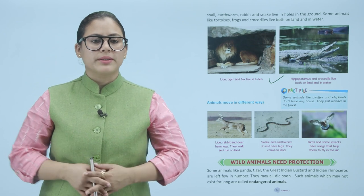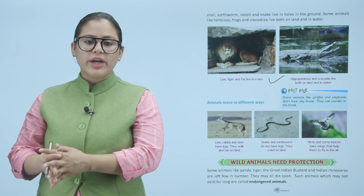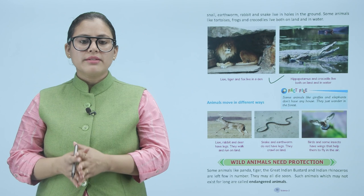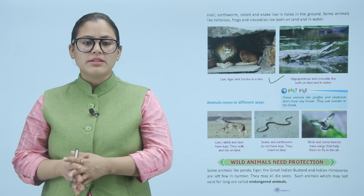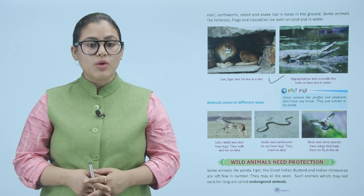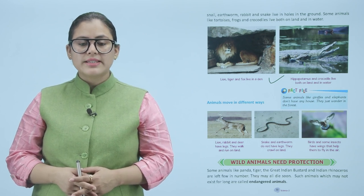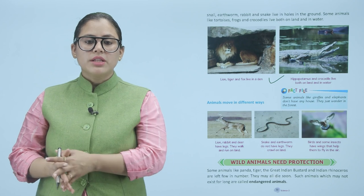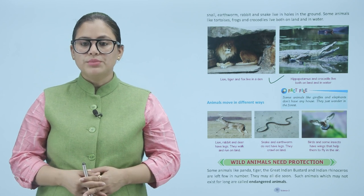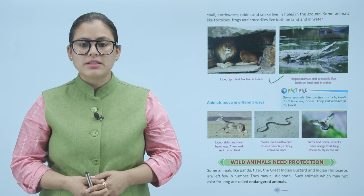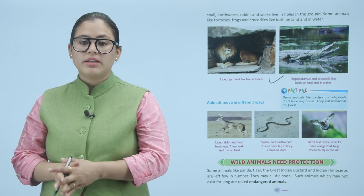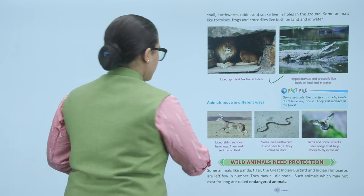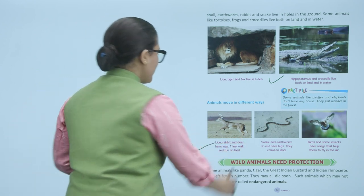Animals move in different ways. Lions, rabbits, and deer have legs — they walk and run on land. Snakes and earthworms do not have legs — they crawl on land. Birds and some insects have wings which help them to fly in the air. Different animals have different ways of movement.